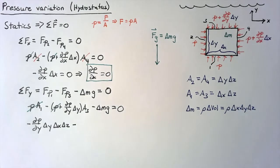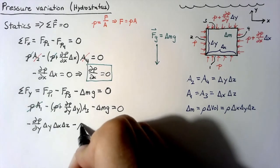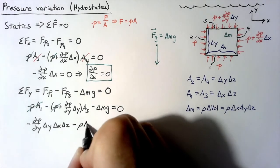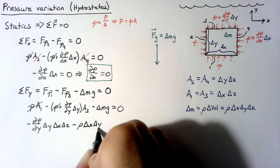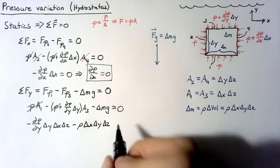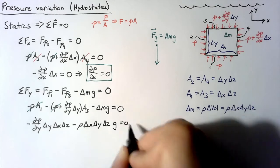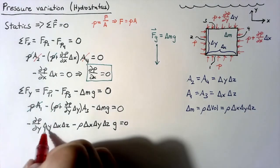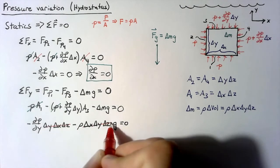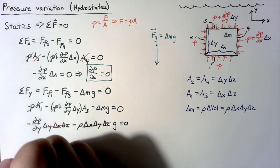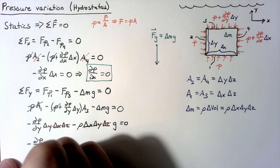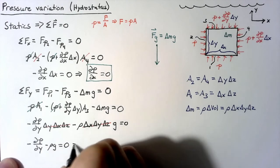And then we have to subtract off our delta m, which was this rho value multiplied by delta x, delta y, delta z, all of that multiplied by gravity. All of these deltas are going to cancel out, and what we end up with is that negative dp dy minus rho g is equal to 0.